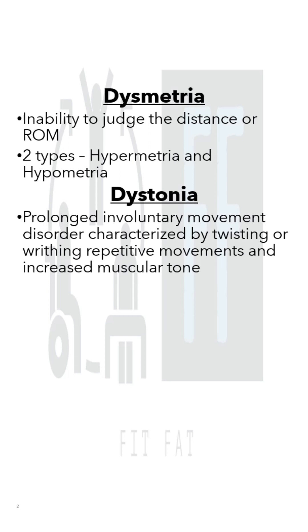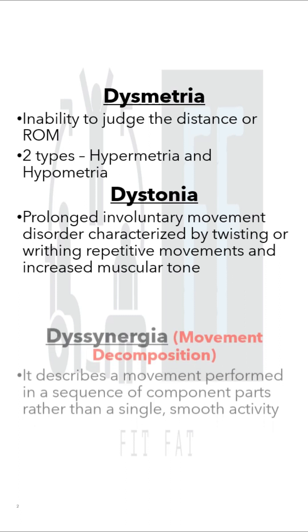The second option is dystonia. It is a prolonged involuntary movement disorder characterized by twisting or repetitive movements and increased muscular tone. One such example of focal dystonia is writer's cramp.